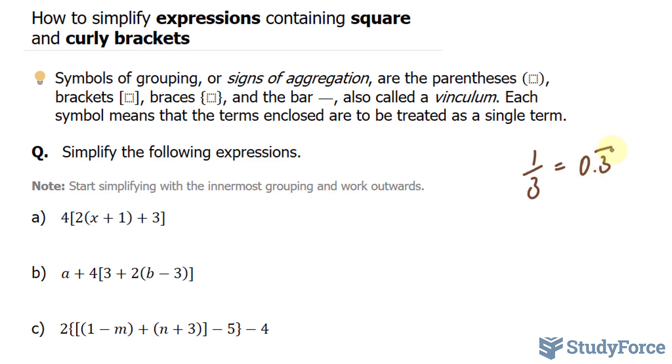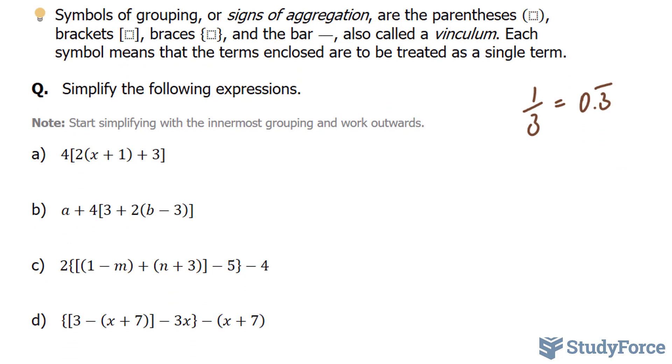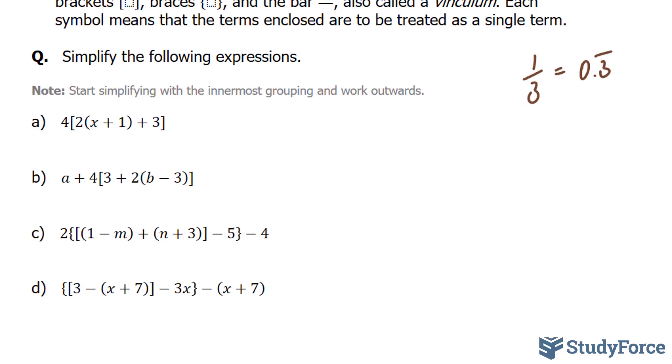Each symbol means that the terms enclosed are to be treated as a single term. We have to simplify the following expressions. The key is to start simplifying with the innermost grouping and then work outwards.